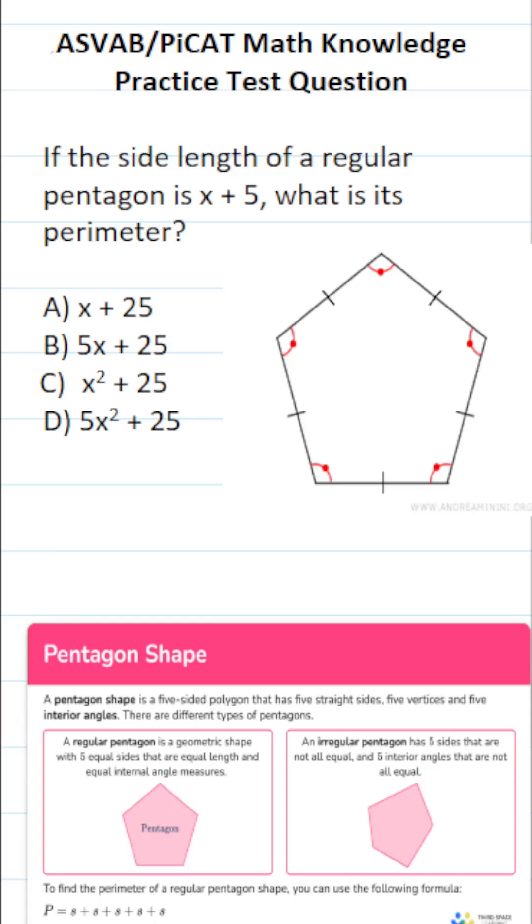This math knowledge practice test question for the ASVAB and PiCAT says, if the side length of a regular pentagon is X plus 5, what is its perimeter?